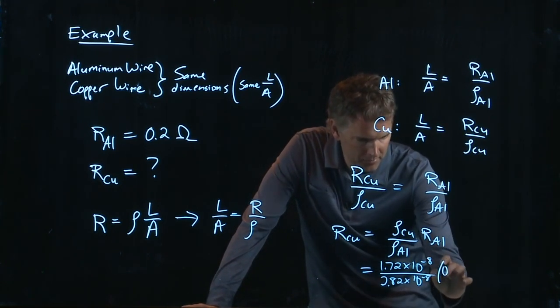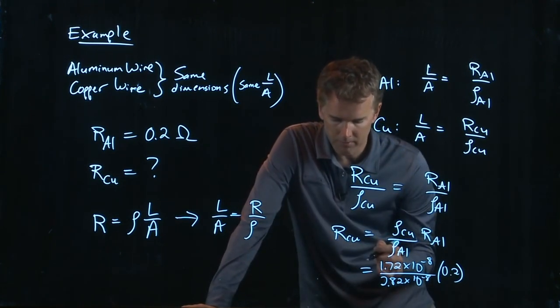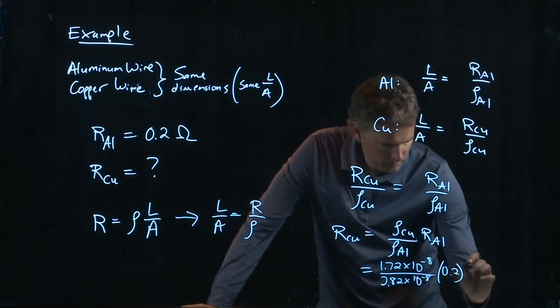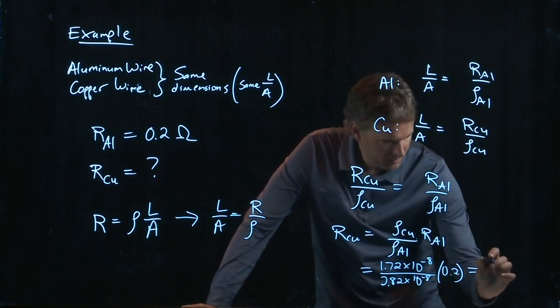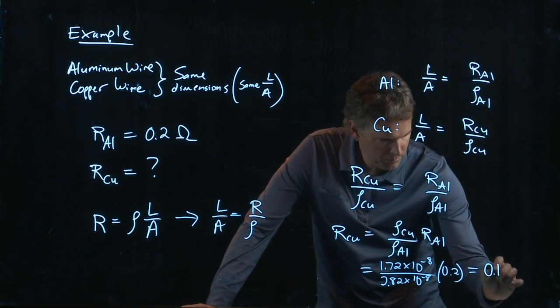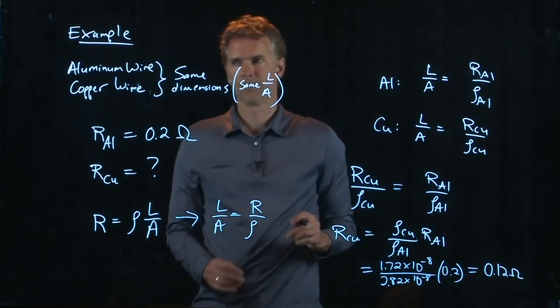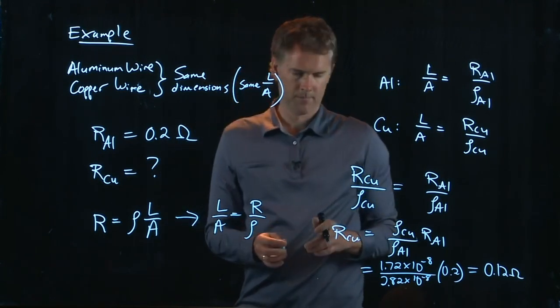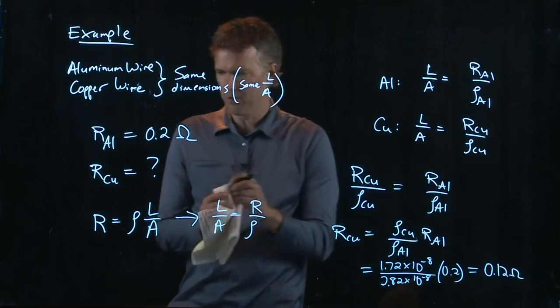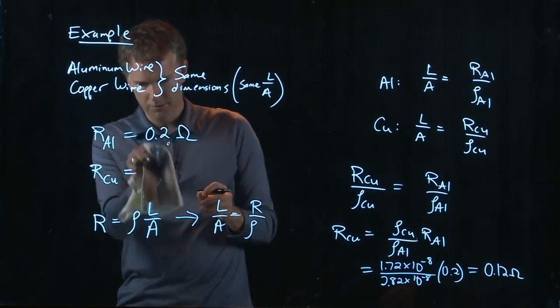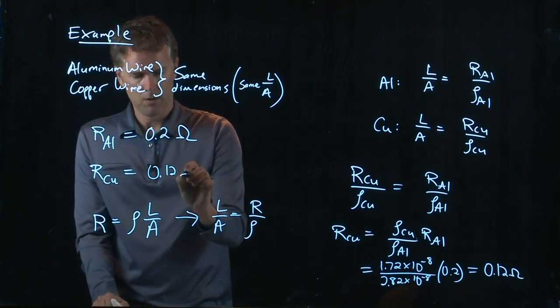And we have a resistance now of 0.2 ohms, which was given to us. So if you plug in all those numbers, I did it earlier, you get 0.12 ohms. All right. R of copper we just found was 0.12 ohms.